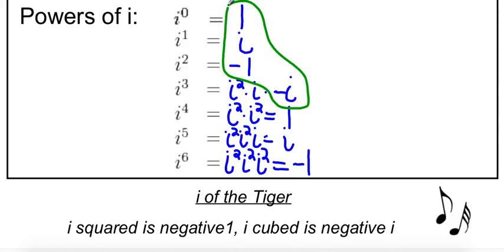Since these occur in cycles of 4, all you have to do is take the power and divide it by 4, and whatever the remainder is, that's the power of i that you want. And I'll give you a demonstration.